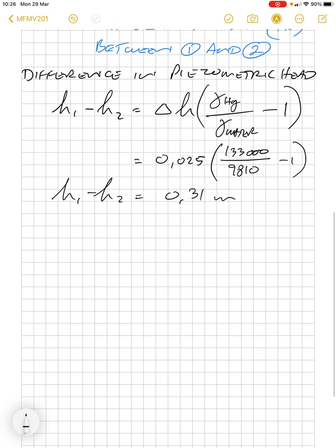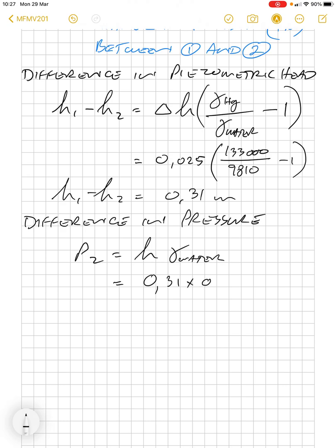The second part of the problem is the difference in pressure. So p2 is equal to h gamma water, pressure at point two. And we know what h is, 0.31 times 9,810. p2 is equal to 3.04 kilopascals.